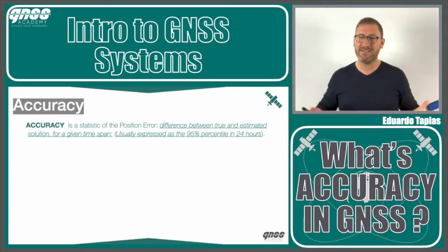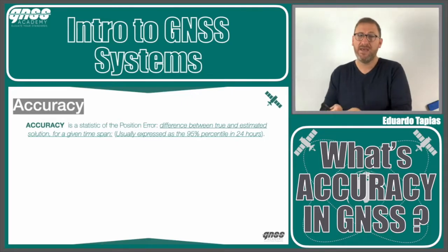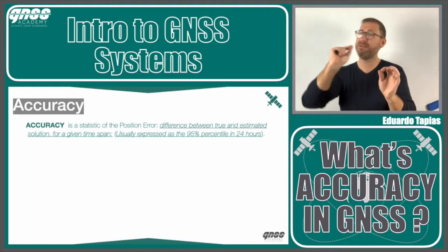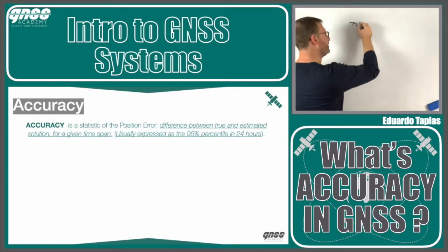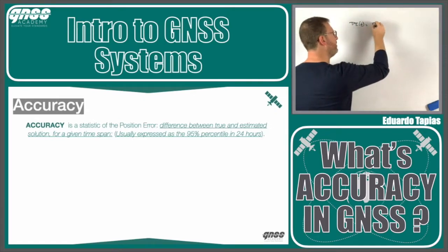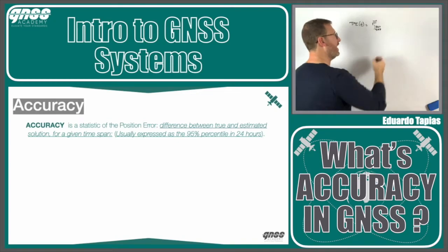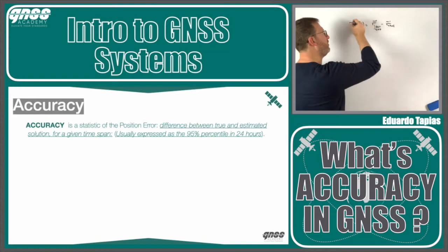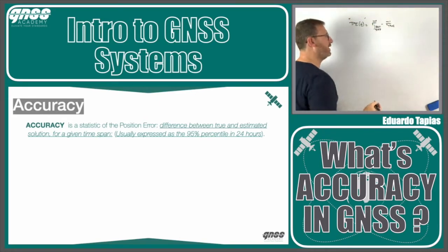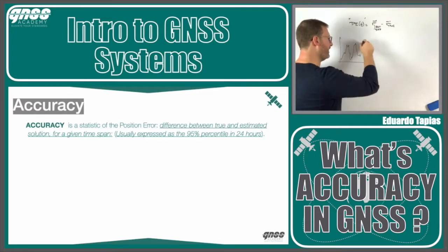Accuracy is a statistic of what we call the positioning error. The positioning error is the difference between the true position and the position estimated by the system — for example, the SPP solution minus the true position. This positioning error varies as a function of time, moving around like this.